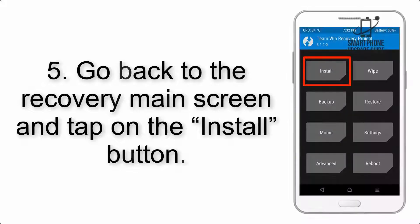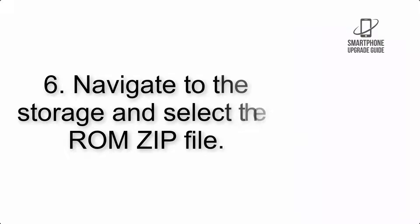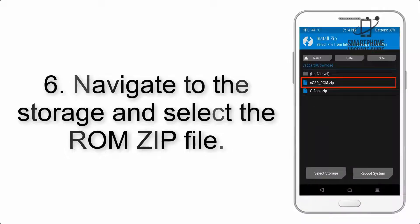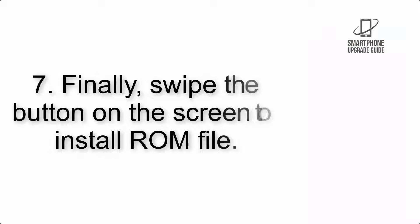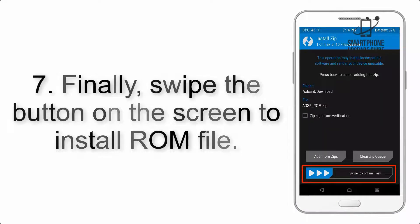Step 5: Go back to the recovery main screen and tap on the Install button. Step 6: Navigate to the storage and select the ROM zip file. Step 7: Finally, swipe the button on the screen to install the ROM file.